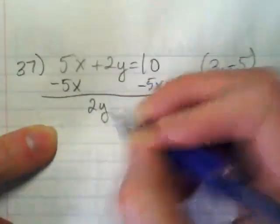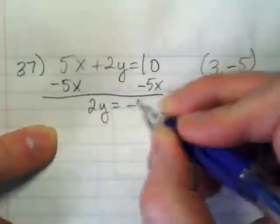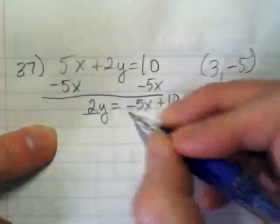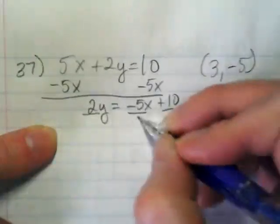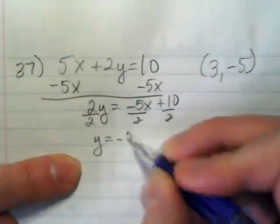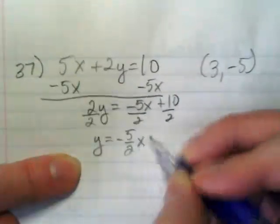So I'm going to end up with 2y is equal to negative 5x plus 10. I'm going to divide everything by 2. I get y is equal to negative 5 halves x plus 5.